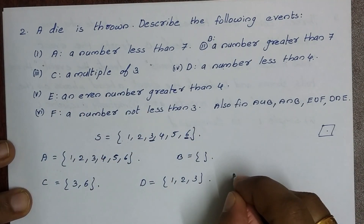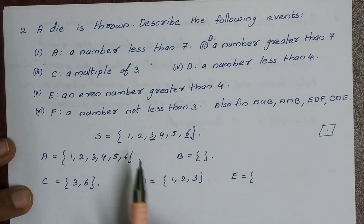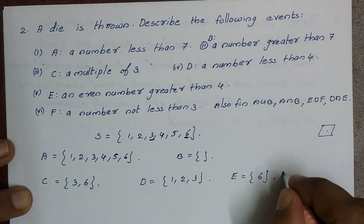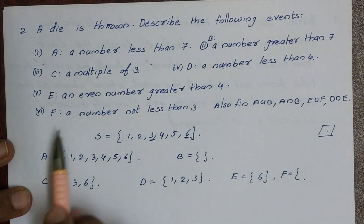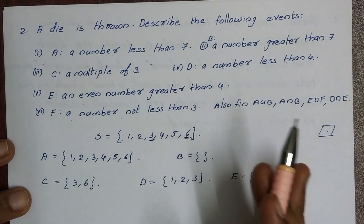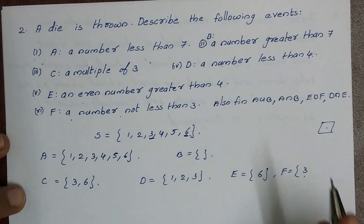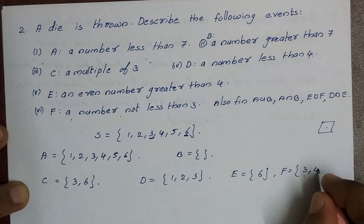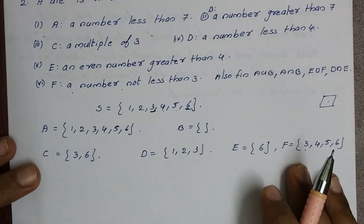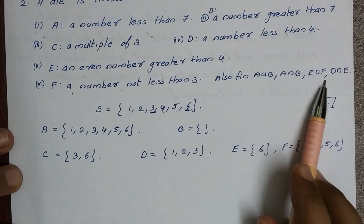Event E is a number greater than 4, so E = {5, 6}. Event F is a number not less than 3, meaning 3 or greater, so F = {3, 4, 5, 6}.